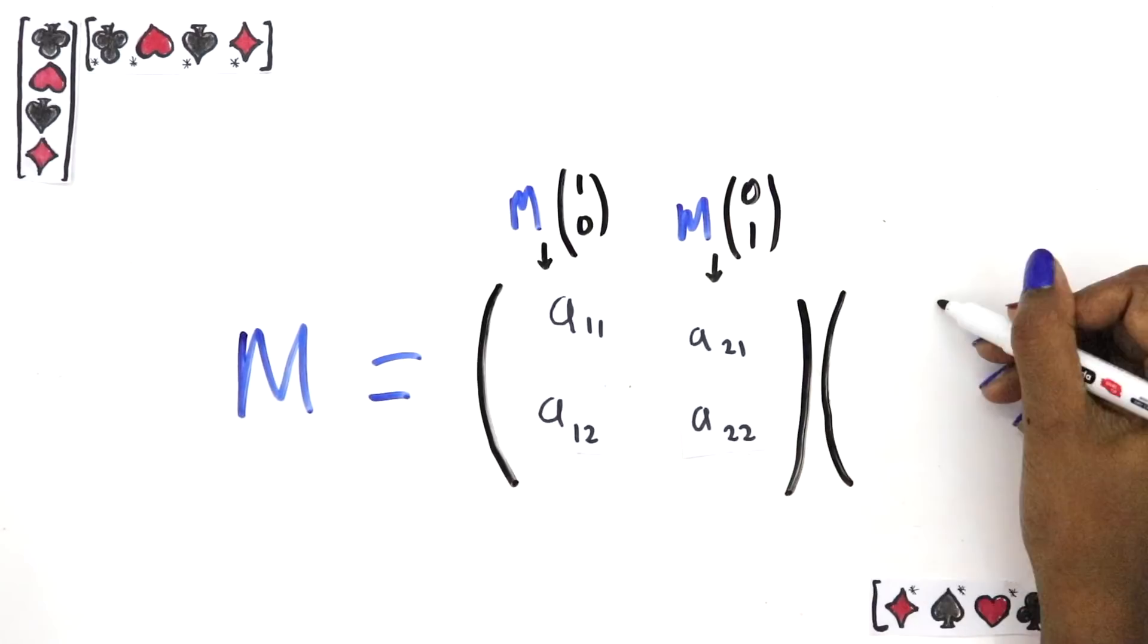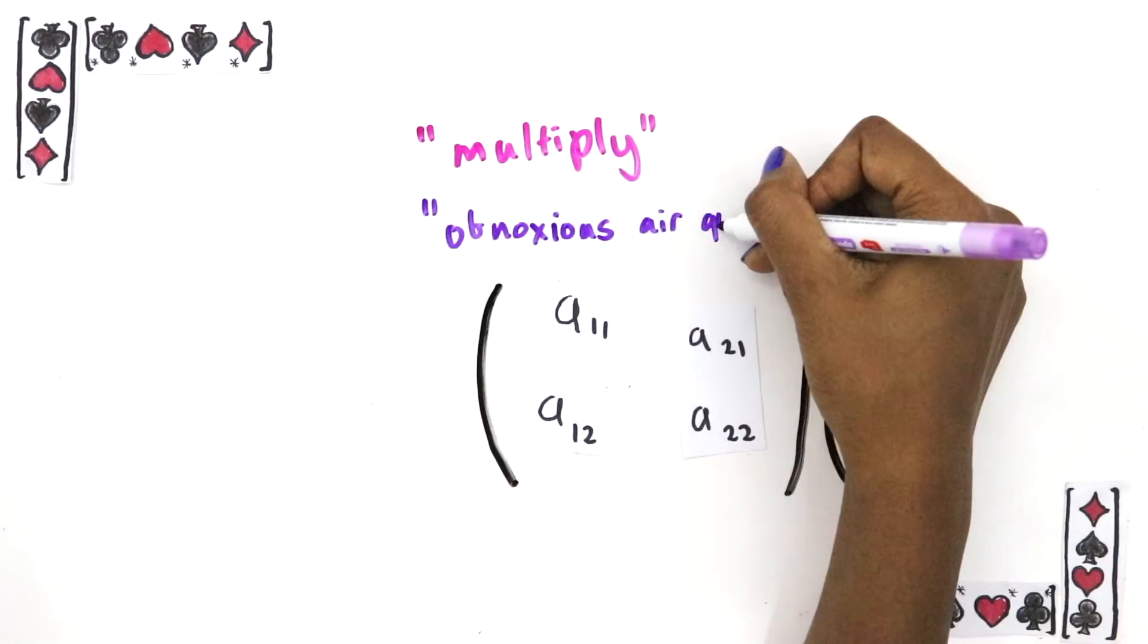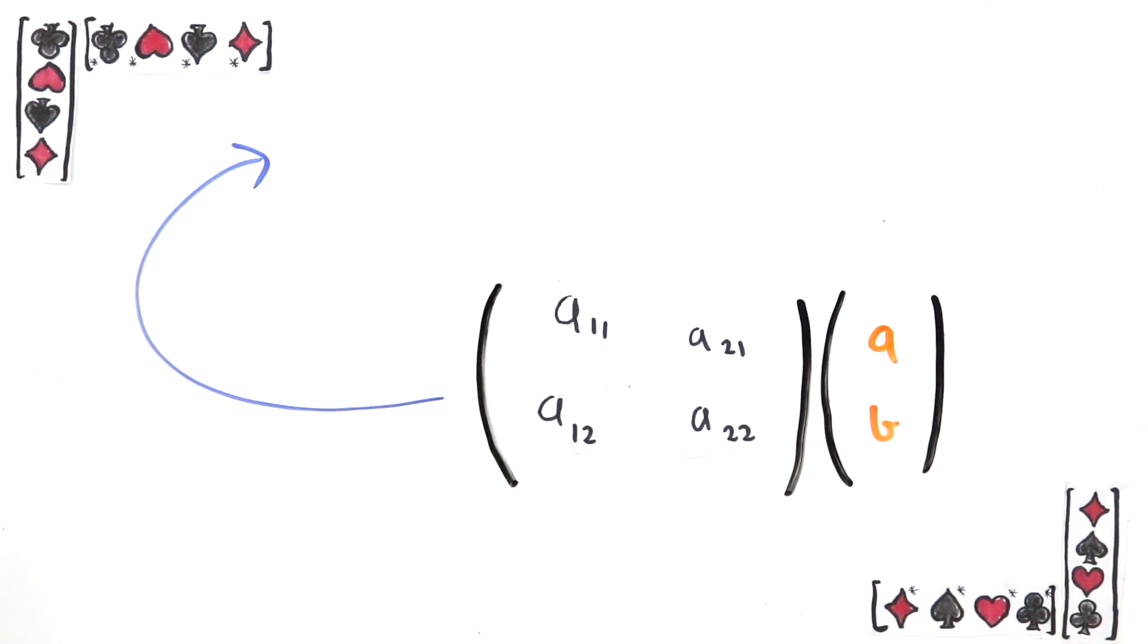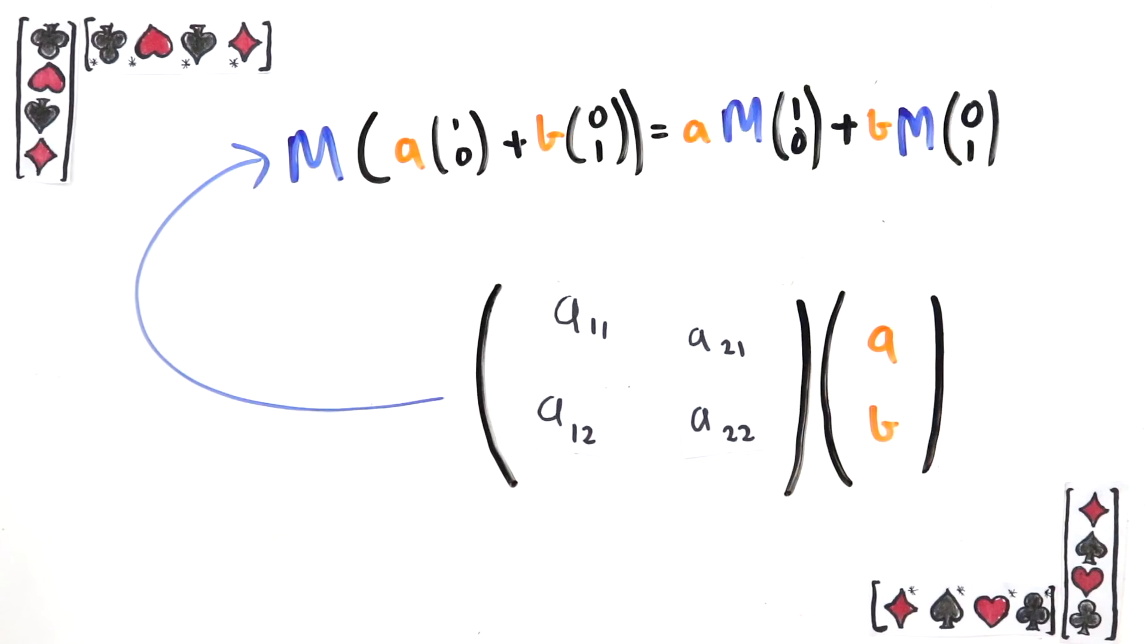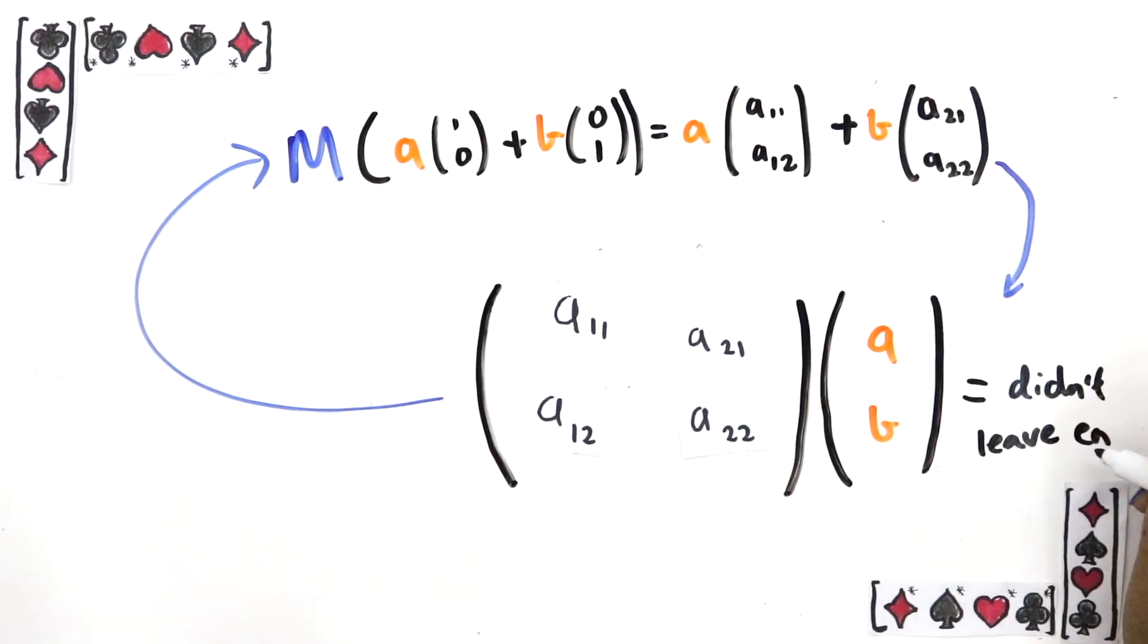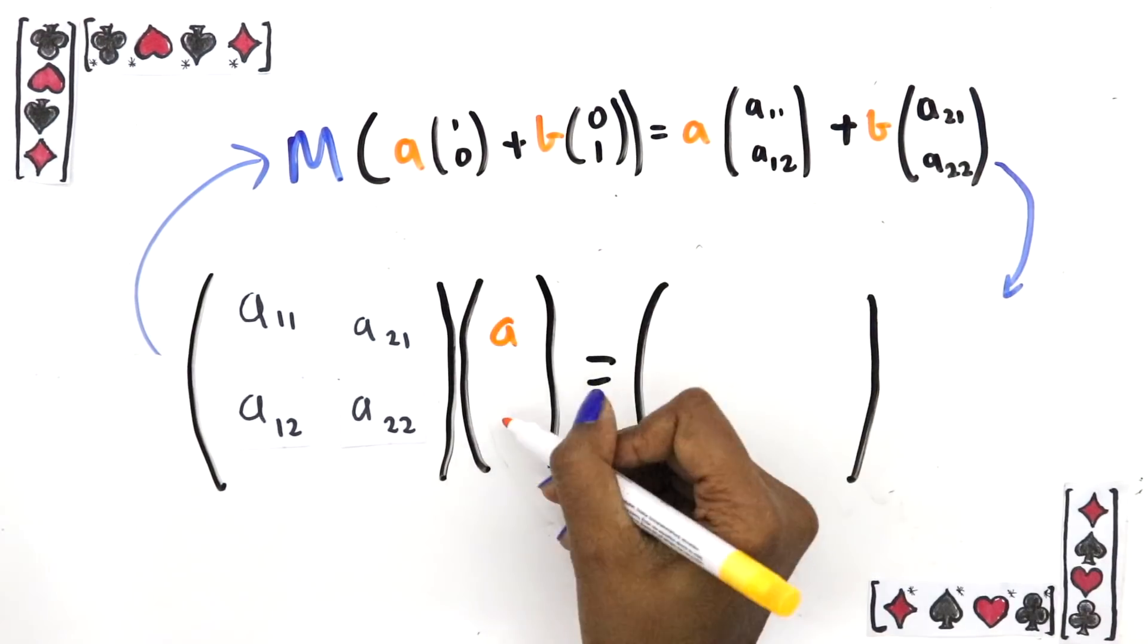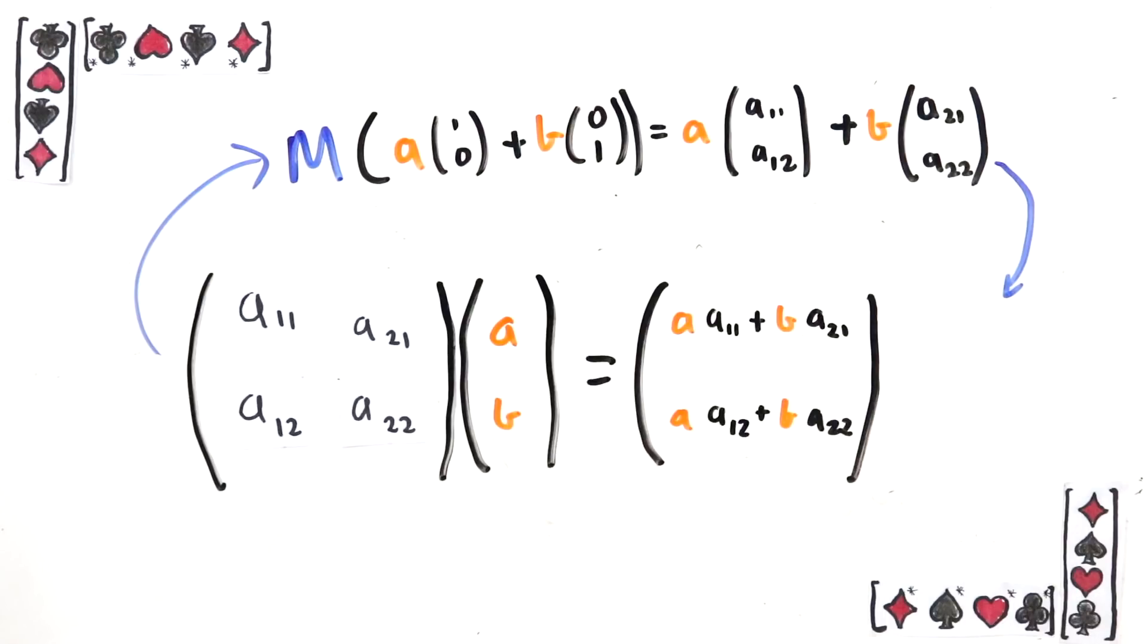Now I can explain what it means to multiply a matrix by a vector. It's not about multiplication at all. All it means is you apply the linear transformation that this matrix represents to the vector that this represents. As we saw, this is equal to this big sum, which you might recognize as the rule for multiplying matrices and vectors.